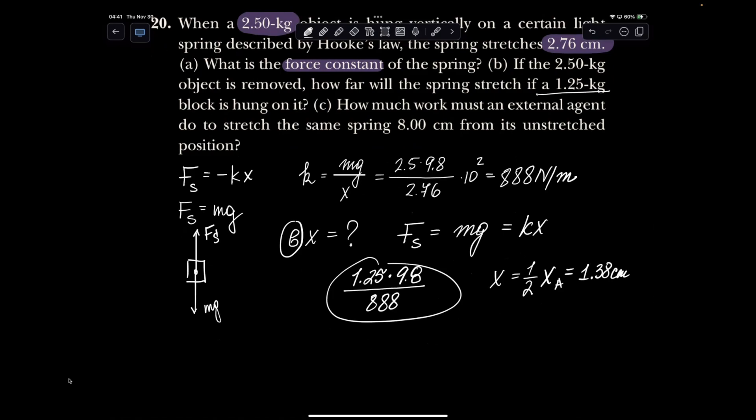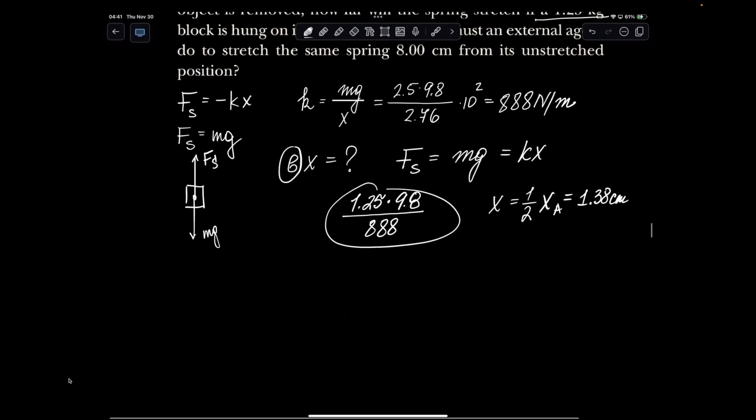And to verify, I'm going to do... Looking at that, huh? All right. So sometimes if you analyze the given data, it gives you a shortcut. So how much work must an external agent do to stretch the same spring 8 centimeters from its unstretched position? So this brings us to elastic energy equal kx squared over 2, and that would be equal to the external work done on the spring by stretching it.